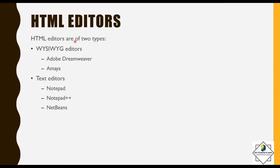HTML editors are of two types. The first is the WYSIWYG editor, also known as the 'What You See Is What You Get' editor. Some examples are Adobe Dreamweaver and Amaya. The second type is text editors; some examples are Notepad, Notepad++, and NetBeans. The basic difference is that the first type is more like a drag-and-drop thing, whereas we prefer using the text editor as it gives more control to the programmer and we get to learn more code.